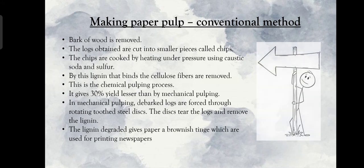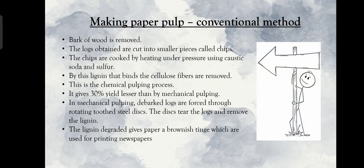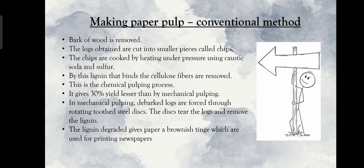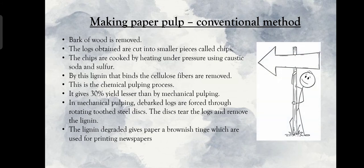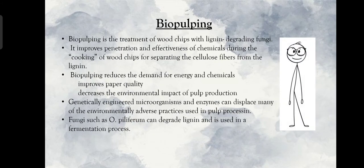In mechanical pulping, logs are forced through rotating toothed steel discs. The discs tear the logs and remove the lignin. The degraded lignin gives paper a brownish tinge, and this type of paper is used for printing newspapers.